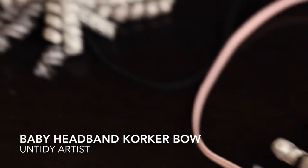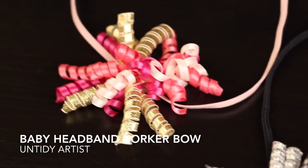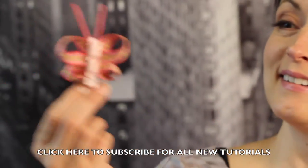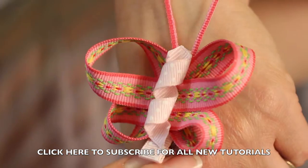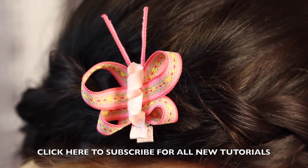Hey guys, welcome back! Today on The Untidy Artist we'll be making a baby headband with a corker bow. Also, I have another video coming up, a fun tutorial for a ribbon butterfly clip that also uses a piece of the corker bow ribbon. If you haven't already subscribed, please do so you'll be the first to see this video when it comes out.